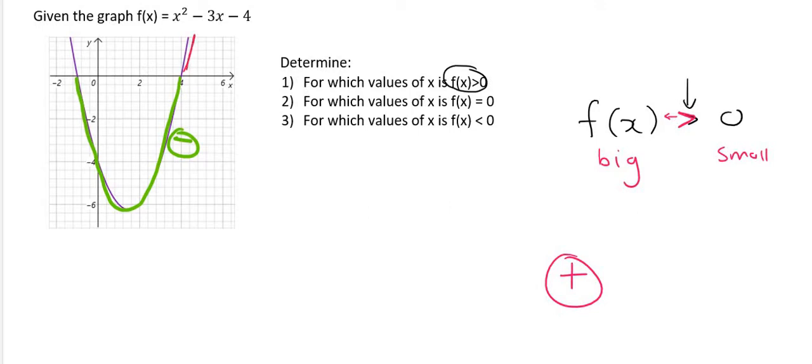What we are interested in is this part over here where the y value is positive and also over here. And that would continue. That would go on forever and ever. Obviously we can't draw it because we have space limitations.